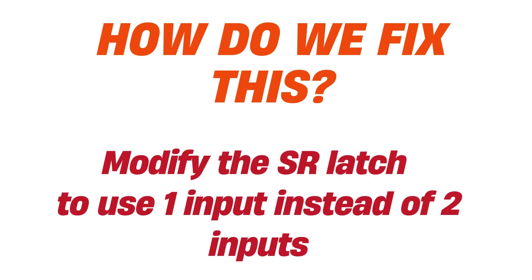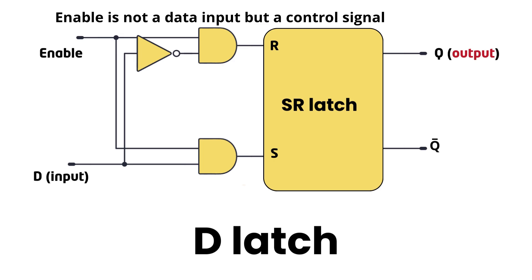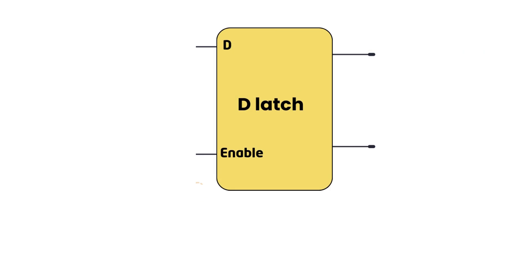The D latch solves the problem by replacing S and R with a single input, D. This ensures that the latch always receives a clear instruction, either store 1 or store 0, eliminating the possibility of conflicting inputs. The D latch has one data input, one control signal called enable, and two outputs. The first input D controls what value we want to store. The control signal enable controls when the latch stores the value from D.